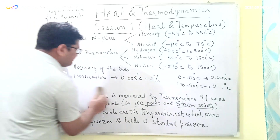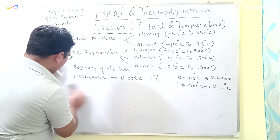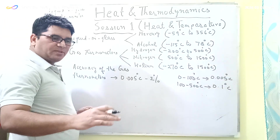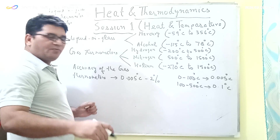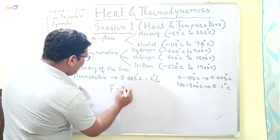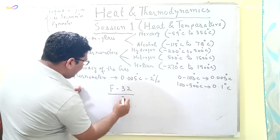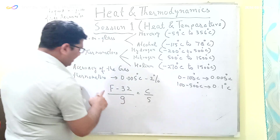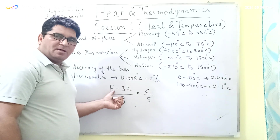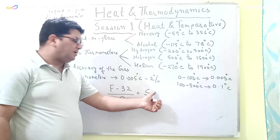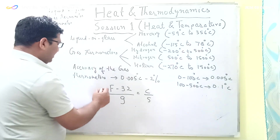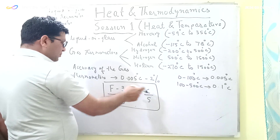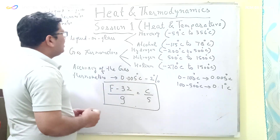There is an important formula for the conversion of temperature between Fahrenheit and centigrade. The formula is: F minus 32 divided by 9, equals C divided by 5, where F is the temperature in degrees Fahrenheit and C is the temperature in degrees centigrade. With this formula you can convert temperature from Fahrenheit to centigrade or from centigrade to Fahrenheit.